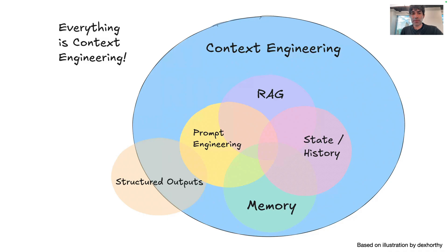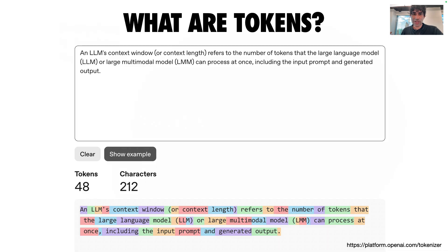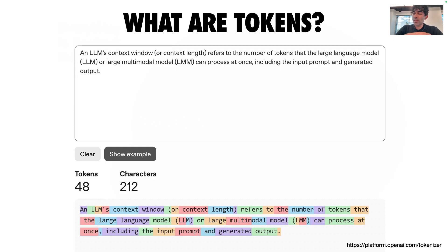First, let's get on the same page about what context is. What's a token? When a computer reads a sentence, it breaks it into smaller parts or tokens to make sense of it, like the colored blocks that you see here. A large language model's context window is the number of tokens that the model can process at once, and that includes the prompt and the generated output.